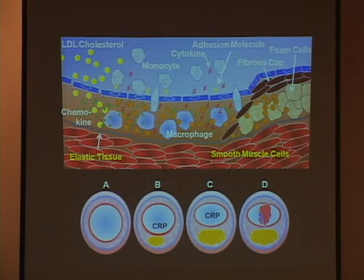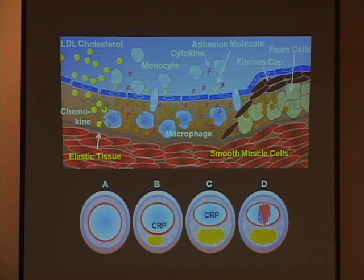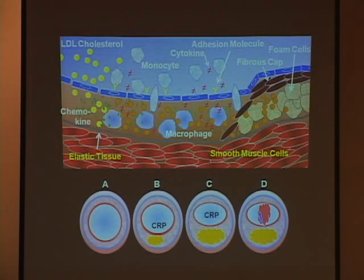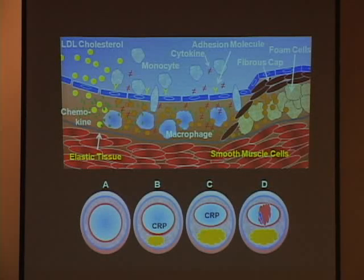Once LDL becomes modified, monocytes are chemoattractively drawn — because of changes in the endothelial lining of the blood vessel — to migrate into the arterial wall, where they transform into macrophages. The macrophages see the modified LDL as a threat and start to phagocytize it, accumulating it until they become foamy-looking — called foam cells — and that's the development of the fatty streak.